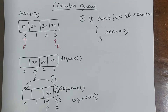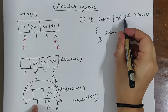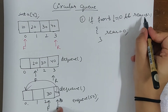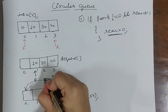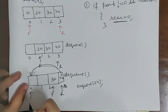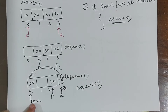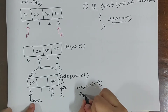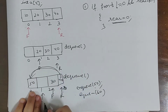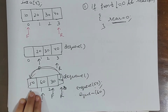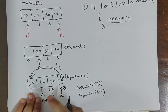Now rear points to 0. The condition is true: front is not 0 (it is 2) and rear is n minus 1. So we point rear to 0. Now I do enqueue 50 — 50 is inserted at position 0. Then insert enqueue 60: rear goes to 1, and 60 is placed there. So now rear is 1 and front is 2.